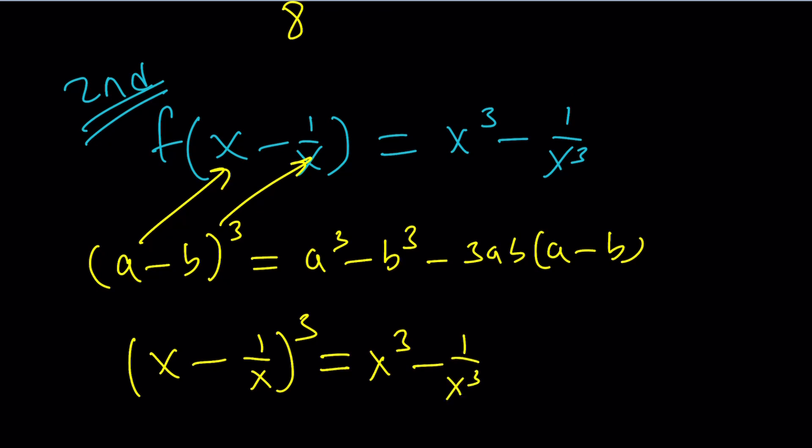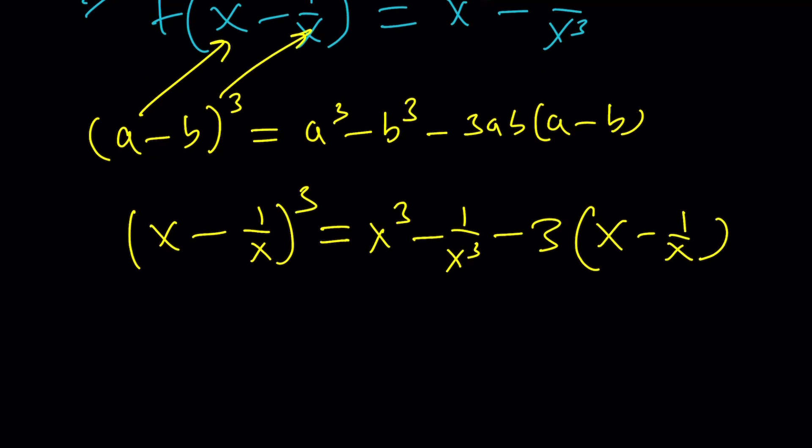And then, minus 3x minus 1 over x is going to give me just a 3. And then, x minus 1 over x. Awesome. And then, my goal is to isolate this. So, let's go ahead and do that.